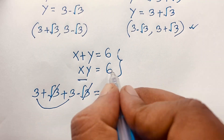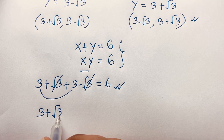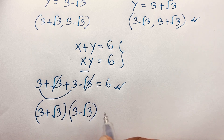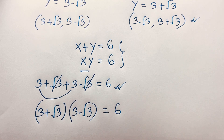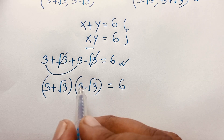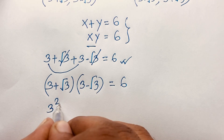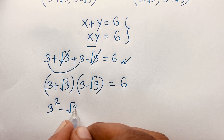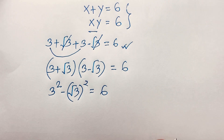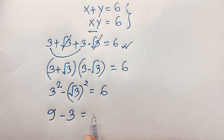Now for the product: 3 plus square root 3 times 3 minus square root 3 equals 6. If we let a equal 3 and b equal square root 3, this is in the form (a plus b)(a minus b), which equals a squared minus b squared. So that gives us 3 squared minus (square root 3) squared, which is 9 minus 3, and 9 minus 3 equals 6.